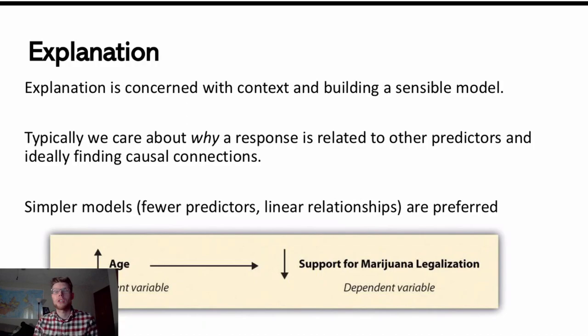Explanation is usually more concerned with the context and the coefficients in our model. For example, when we interpret coefficients in a regression model, we're talking about the average or expected change in the response given a one unit increase in the predictor variable. For that reason, it's usually more concerned with making simpler models, the fewest predictors we really need. We tend to like having linear relationships because those are easier to interpret.